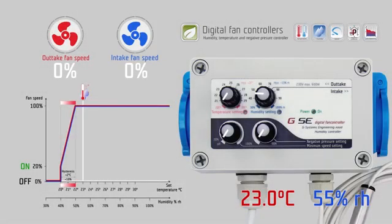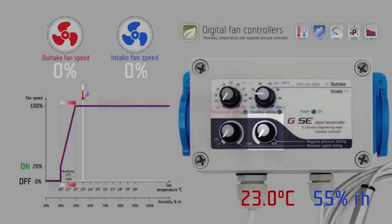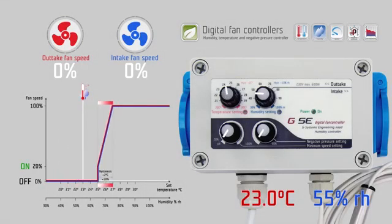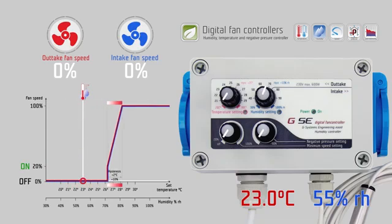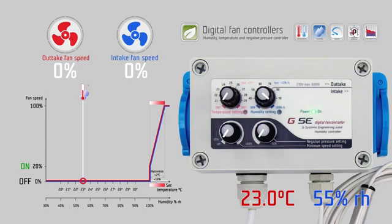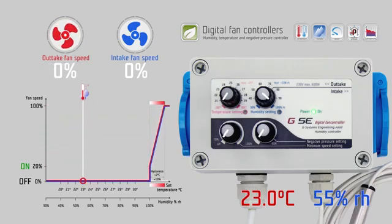You can set four settings on four knobs: temperature, humidity, minimum speed, and negative pressure setting. The temperature range is from 20 to 30 degrees Celsius. The humidity range is from 30 percent to 100 percent relative humidity. The minimum speed setting goes from off position, jumps to 20 percent, and is variable up to 100 percent speed. The negative pressure setting ranges from 100 percent to minus 50 percent intake fan speed.